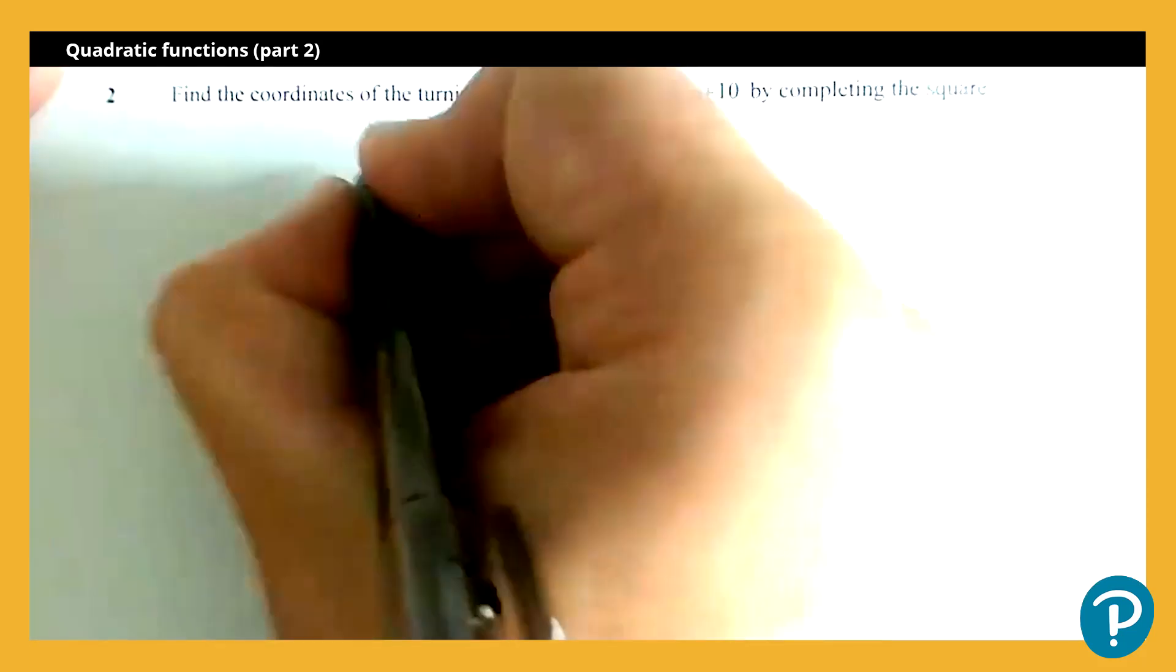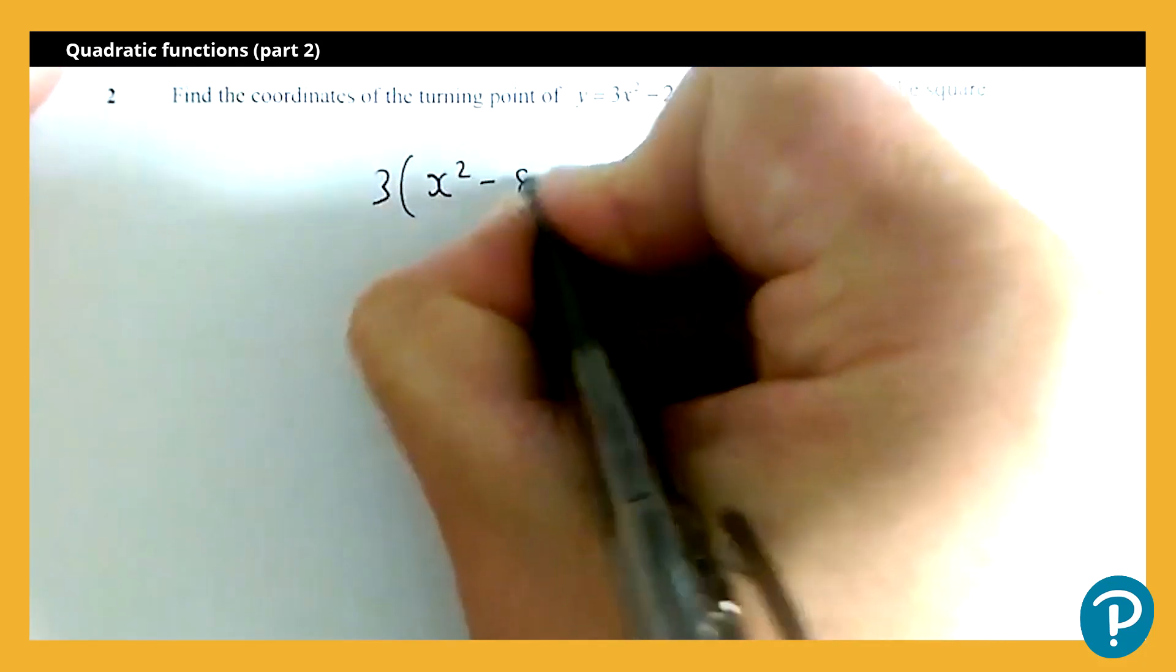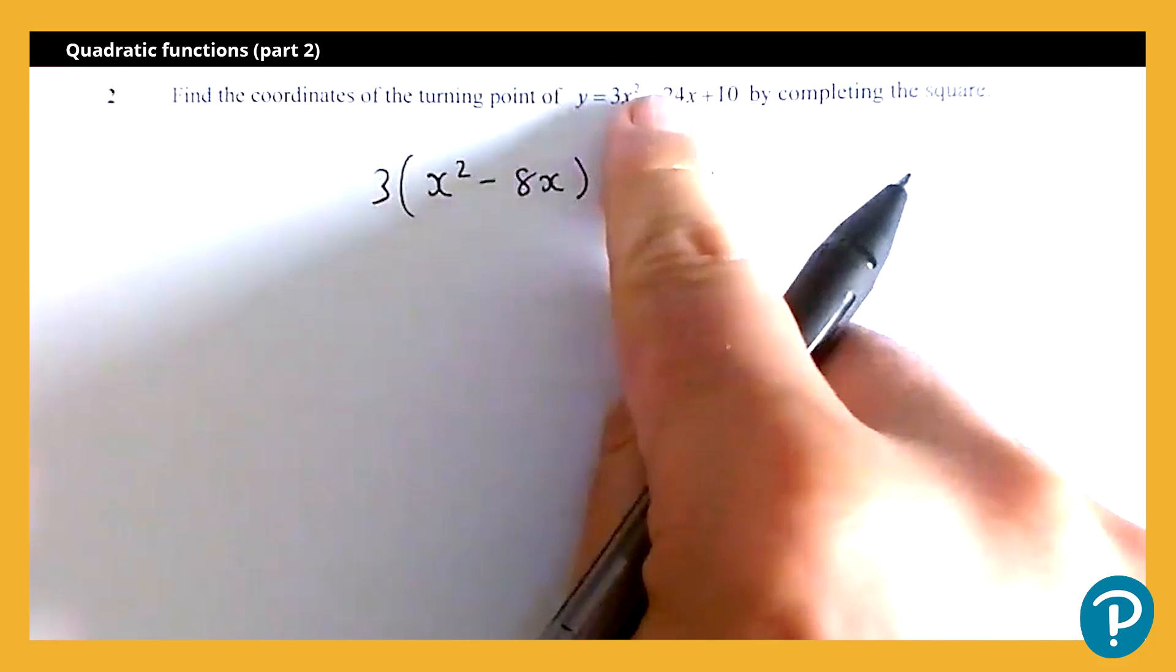I'm just going to leave this term on its own, so I'm going to rewrite that as three times x squared minus eight x, and I've got plus 10. So if I was to expand that bracket, I'll be back where I started.